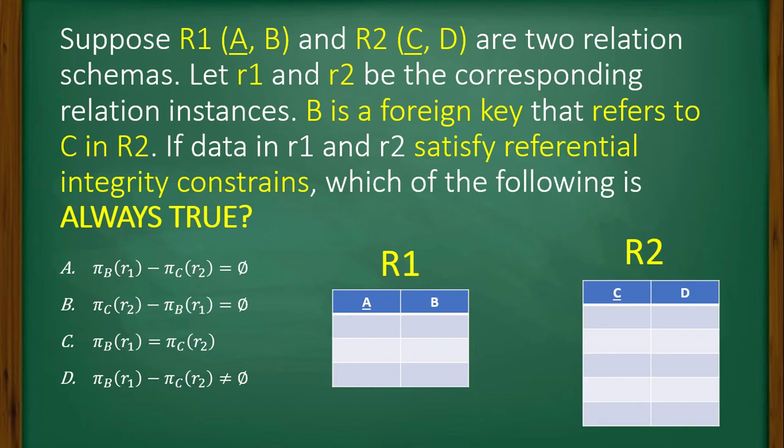And R2 is another table with two attributes C and D. C is the primary key as it is underlined. Now, it is said that in R1 this B is a foreign key which refers to this C.